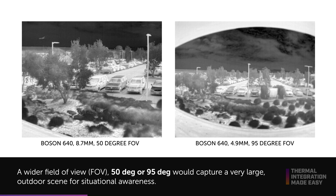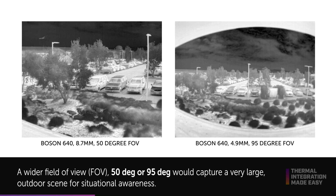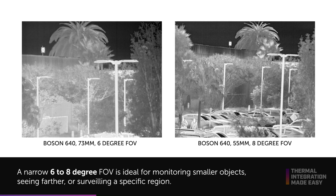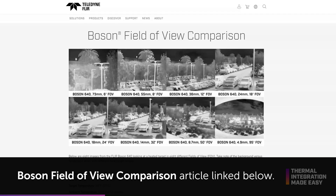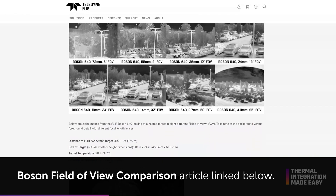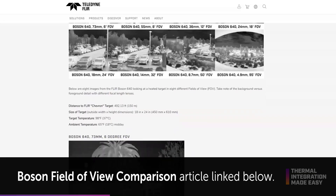For a wider field of view, 50 degree or 95 degree would capture a very large outdoor scene for situational awareness, where a narrow 6.8 degree field of view is ideal for monitoring smaller objects, seeing further, or surveying a specific region. To compare more FOVs, go to the Boson FOV comparison page linked below.